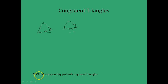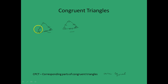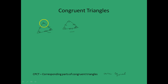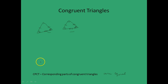CPCT stands for corresponding parts of congruent triangles, and corresponding parts of congruent triangles are equal by the very definition of congruency. So therefore, the corresponding side to this side would be this side in the other triangle and so on. Because this triangle is congruent to this triangle, this side will be equal to this side, and the angle corresponding to this angle is this angle, and this angle is equal to this angle and so on. Corresponding parts of congruent triangles are equal — this is a very important property and will be used when doing questions.